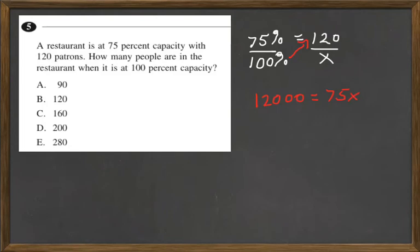And then we're going to go ahead and divide that by 75 on this side to get the x by itself. And we divide by 75.